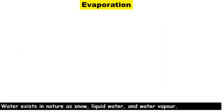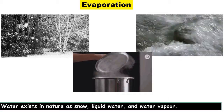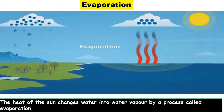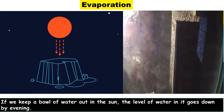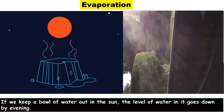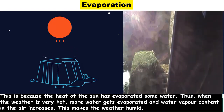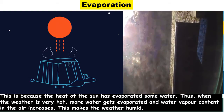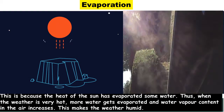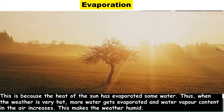More than 70 percent of the Earth's surface is covered with water. Evaporation: Water exists in nature as snow, liquid water, and water vapor. The heat of the Sun changes water into water vapor by a process called evaporation. If we keep a bowl of water out in the sun, the level of water in it goes down by evening — this is because the heat of the sun has evaporated some water. When the weather is very hot, more water gets evaporated and water vapor content in the air increases, making the weather humid.